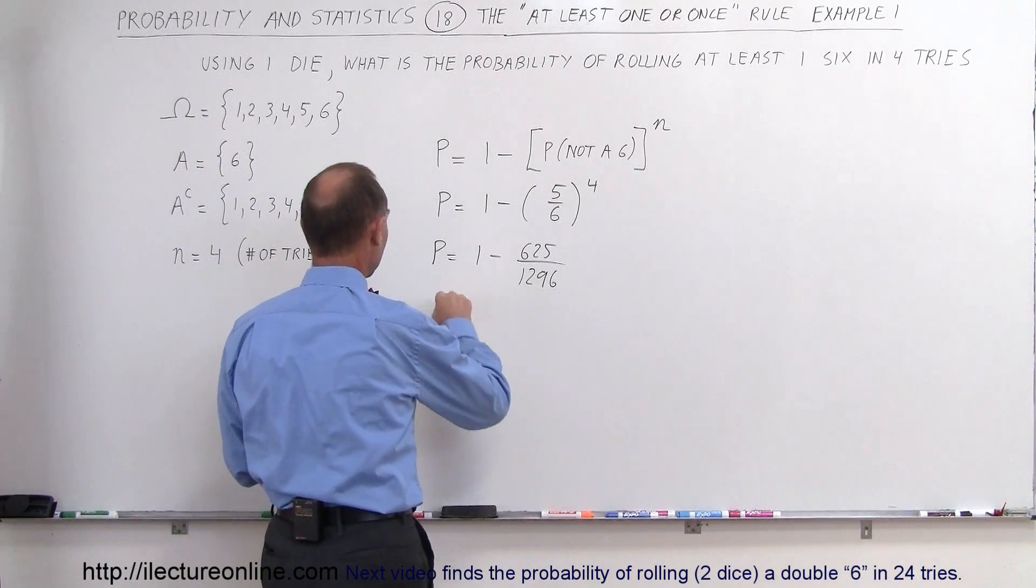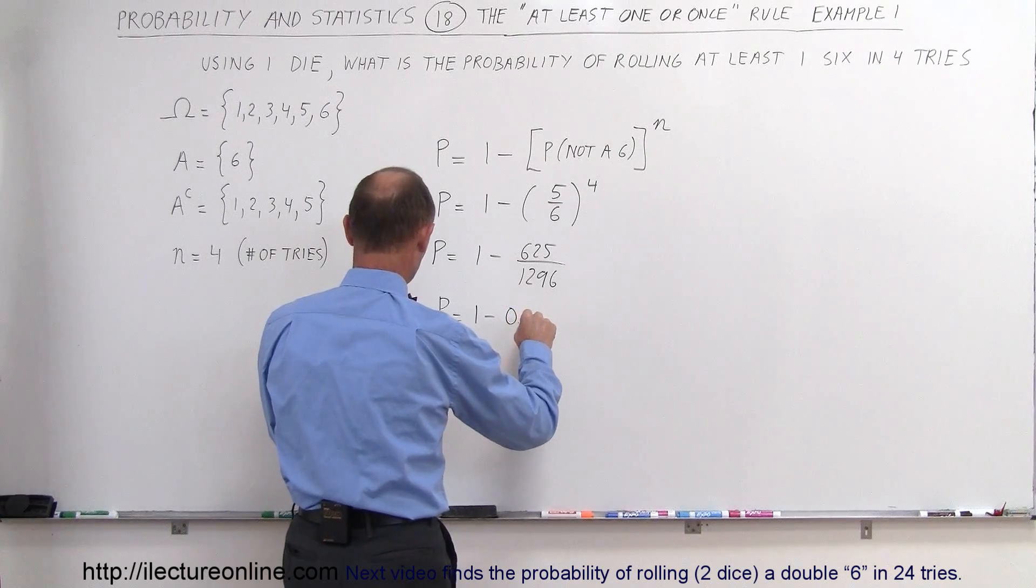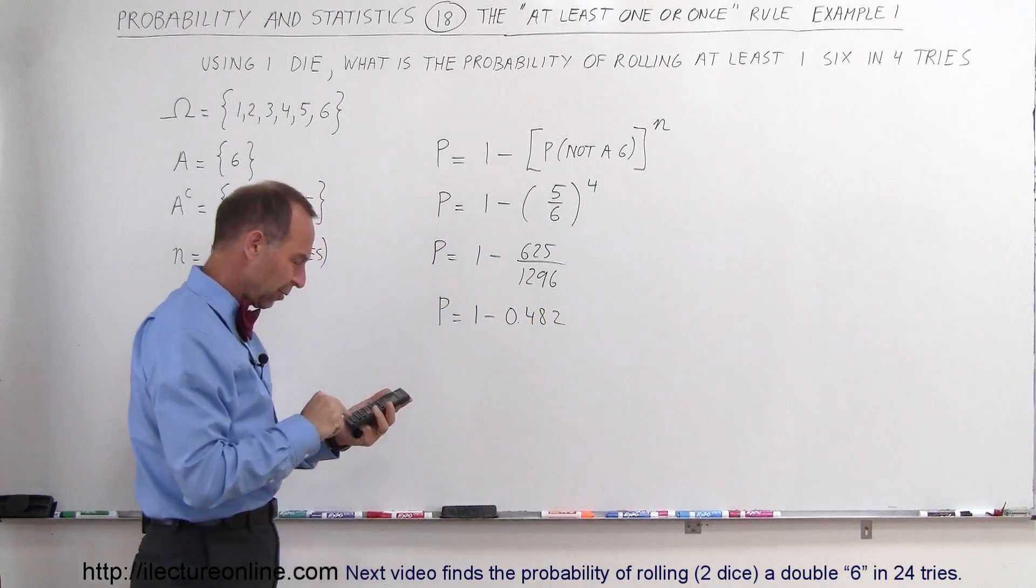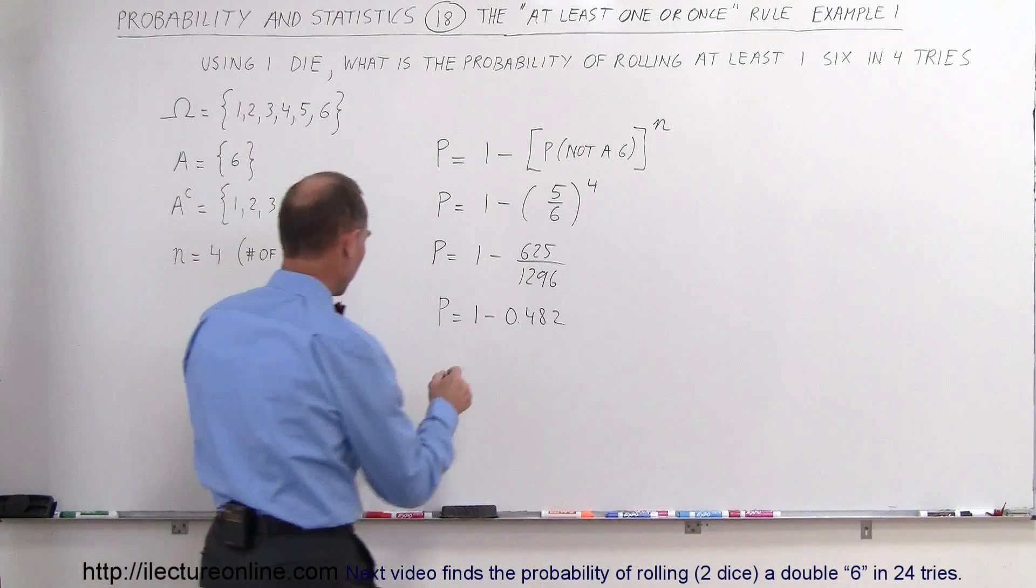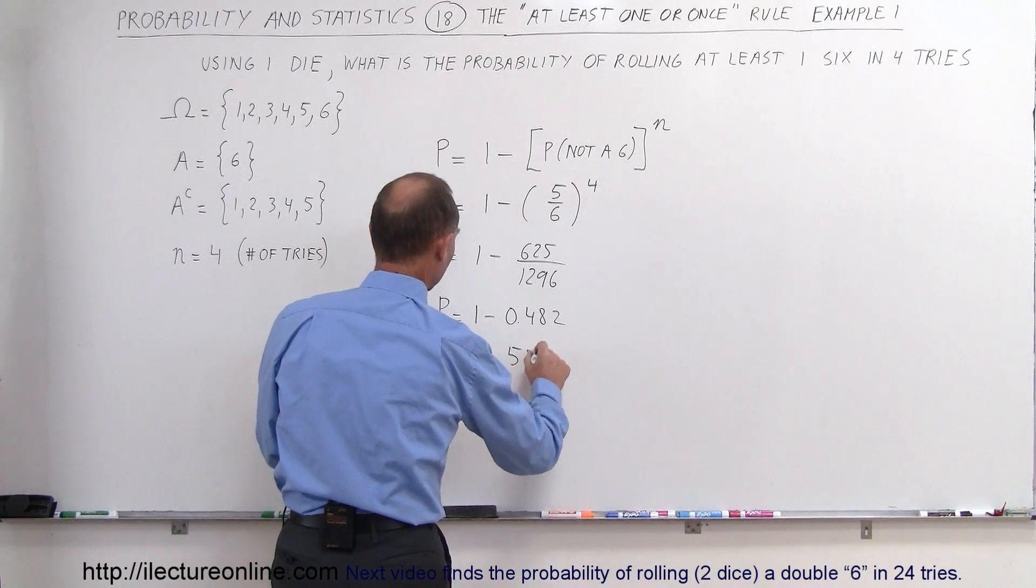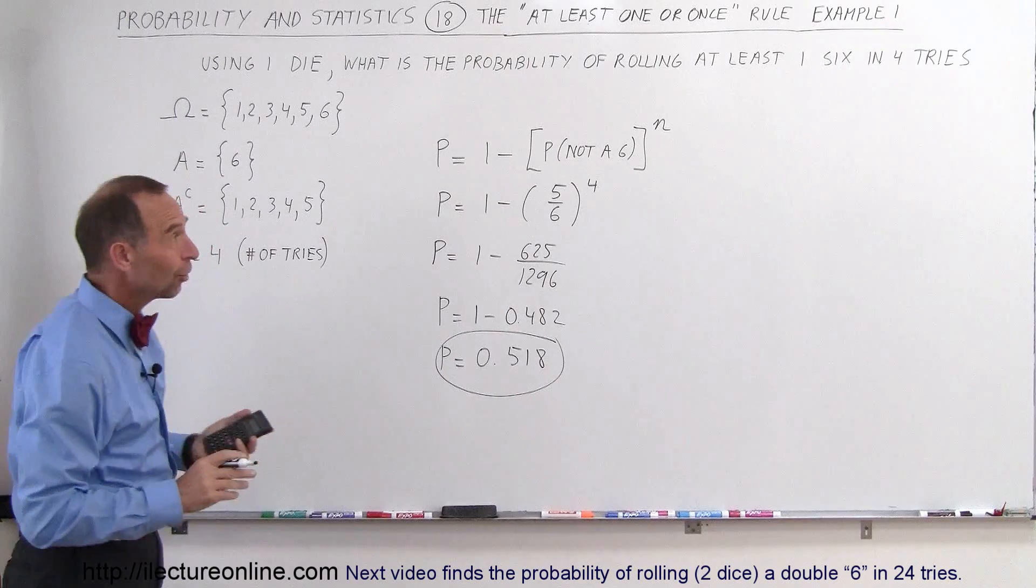That equals one minus 0.482, and when we subtract that from one, we get a probability of 0.518. That's interesting.